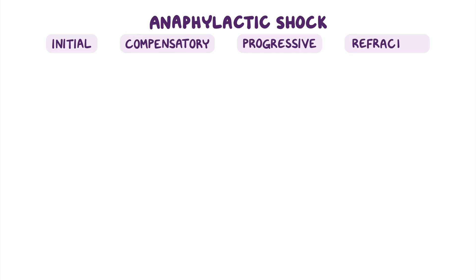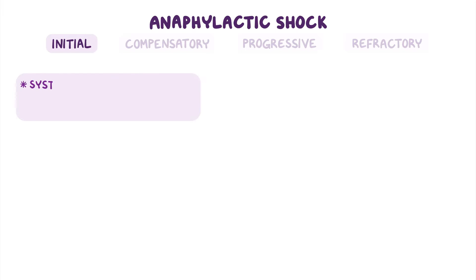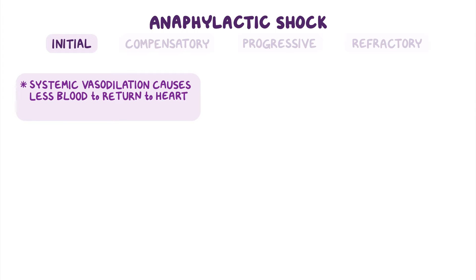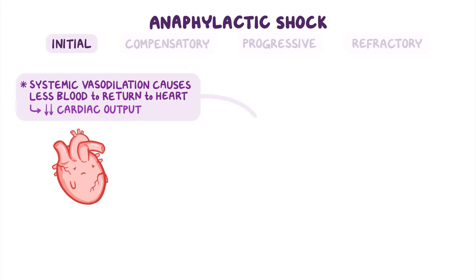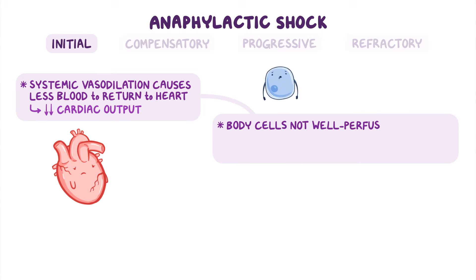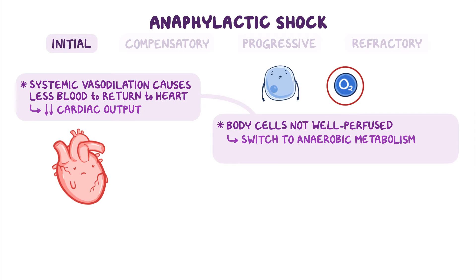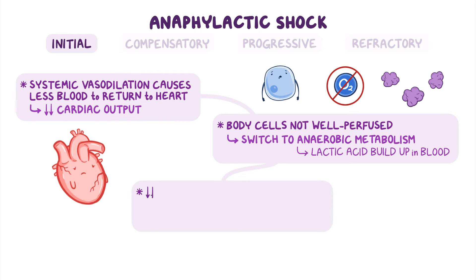The next events in anaphylactic shock are grouped into four stages: initial, compensatory, progressive, and refractory. In the initial stage, systemic vasodilation causes less blood to return to the heart through the venous system, which in turn decreases cardiac output. As a consequence, body cells are not well perfused, so they switch to anaerobic metabolism to produce energy, causing lactic acid to build up in the blood. When lactic acid builds up, it lowers blood pH, causing metabolic acidosis.